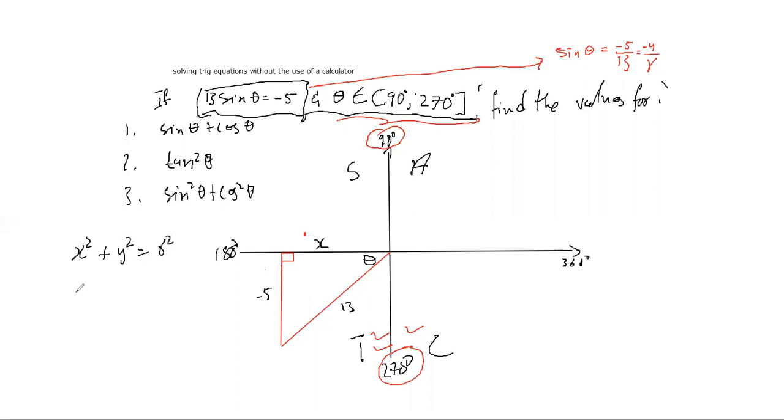X squared plus Y squared equals R squared. This is X squared plus negative 5 squared which equals 13 squared. This is 25 and that is 169, therefore X squared will be 169 minus 25 which gives us 144. To find X we take square roots of both sides, so X is plus or minus 12.